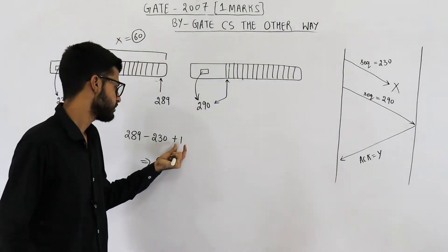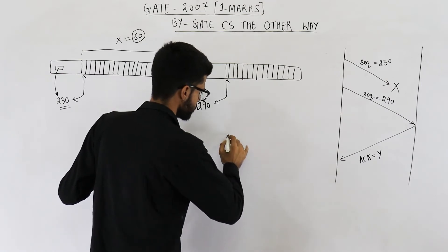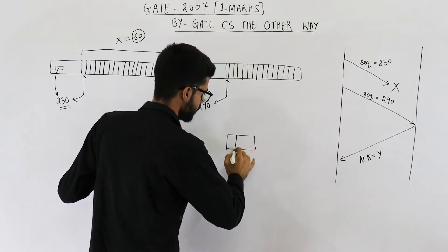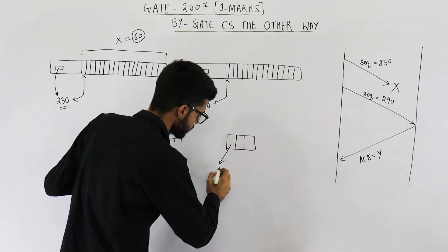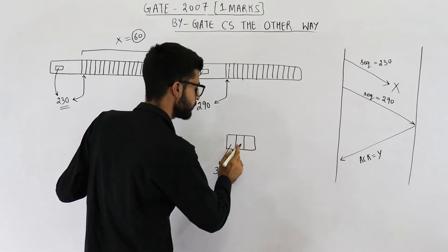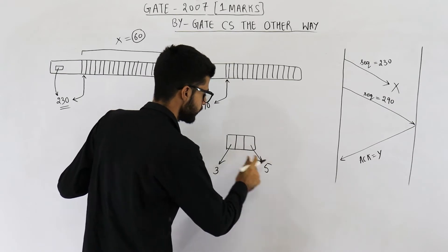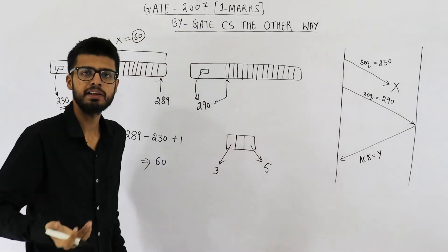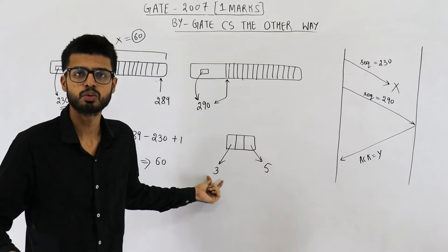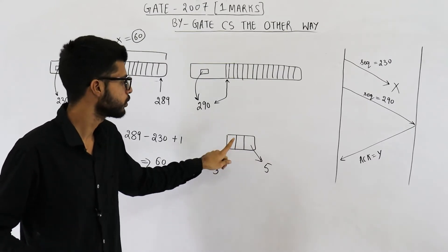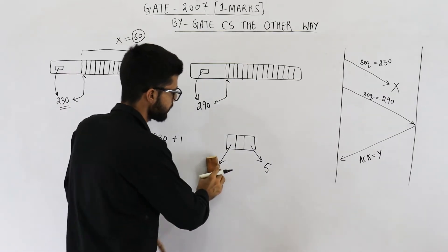If you are not able to understand why I have done plus 1 here, then have a look. Suppose these are the data bytes: byte number 3, byte number 4, byte number 5. How many total bytes are there? 5 minus 3 plus 1, that will be 3. So we need to count the starting byte also — that is the reason I am doing plus 1.